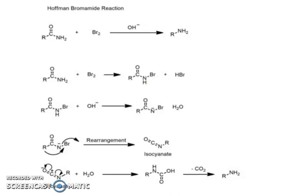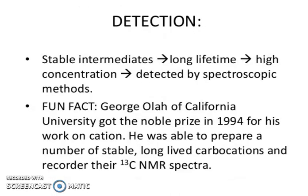In the Hoffmann rearrangement reaction, you can see the formation of an amine from a substituted amide. The key intermediate is isocyanate, and after decarboxylation, you will get the amine product.